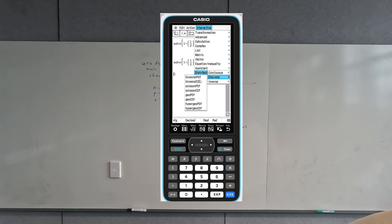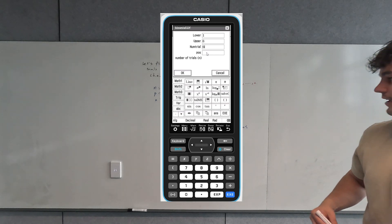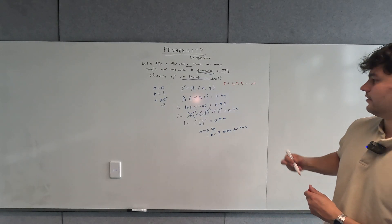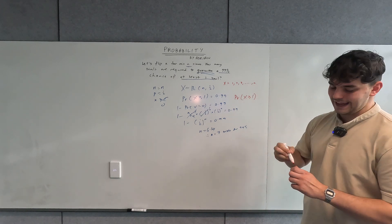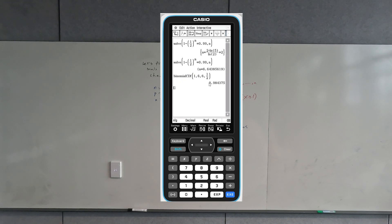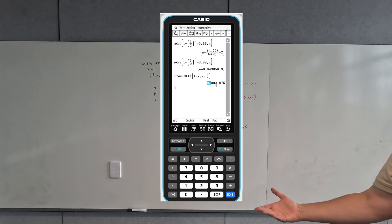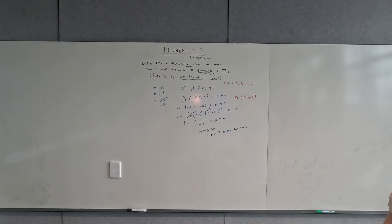Going to distributions, discrete binomial CDF, with a lower bound of one, upper bound of six, and probability of success of one half — you can see this gives less than 0.99. But if I make it seven instead, it guarantees a 99% probability with a value greater than 0.99. So that's how I guarantee a 99% probability for this question.